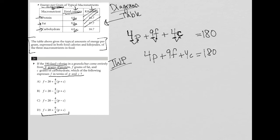I want to isolate my F. So I'm going to subtract 4P and subtract 4C from both sides here. So minus 4P minus 4C. So what I'm left with is 9F equals 180 minus 4P minus 4C.